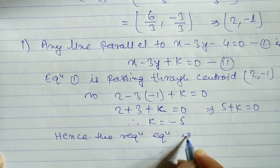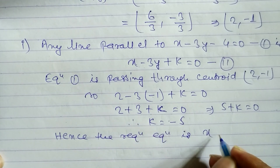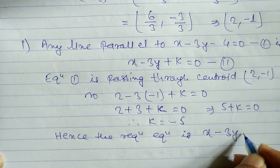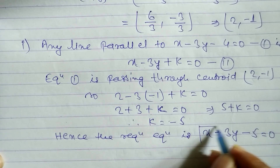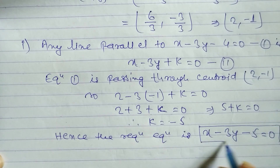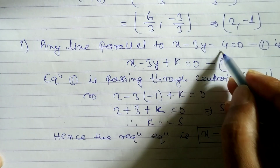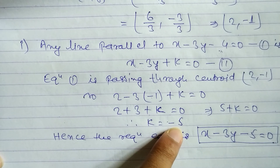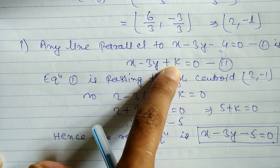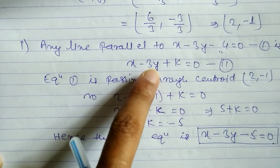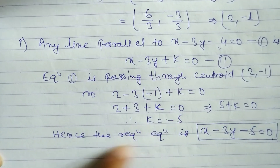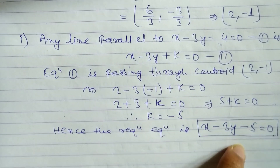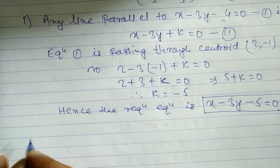Substituting k = -5 back into the equation, the required equation of the line parallel to x - 3y - 4 = 0 and passing through the centroid is: x - 3y - 5 = 0.